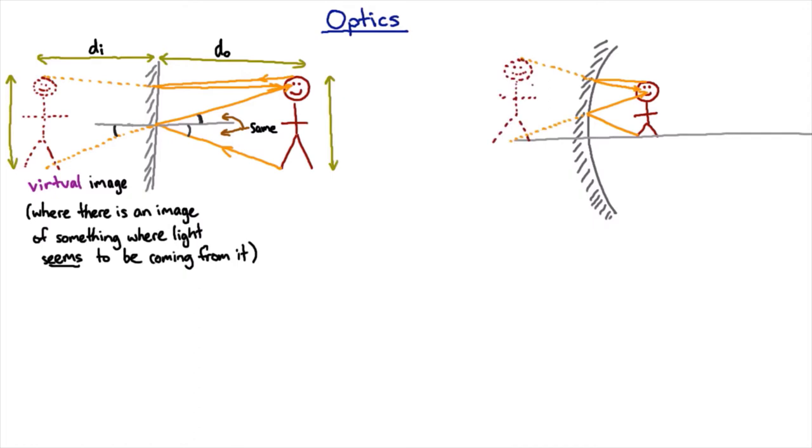But you'll see it's magnified. If you do exactly the same thing with the mirror curved the other way, you'll see you get a virtual image where the image is smaller than the person.